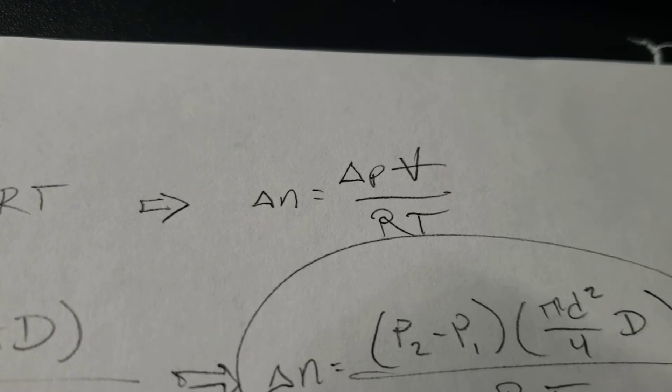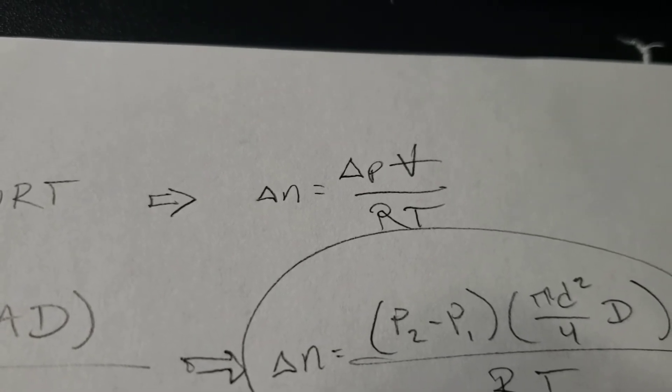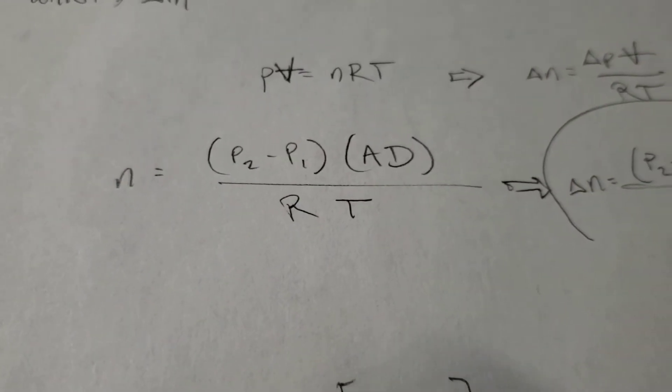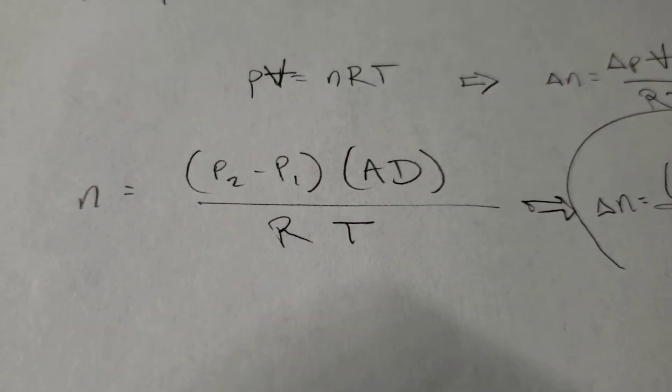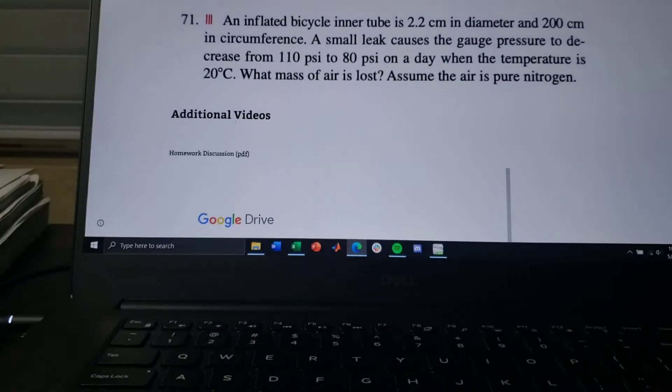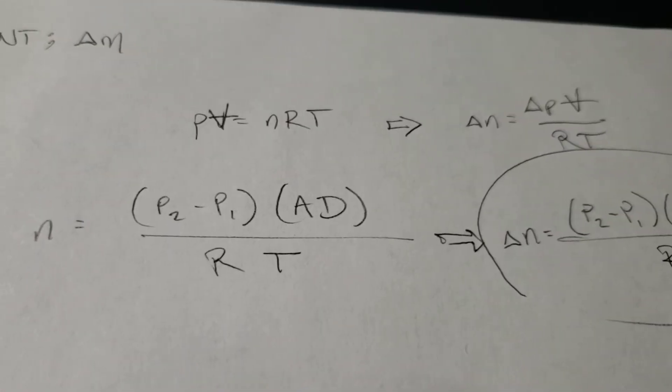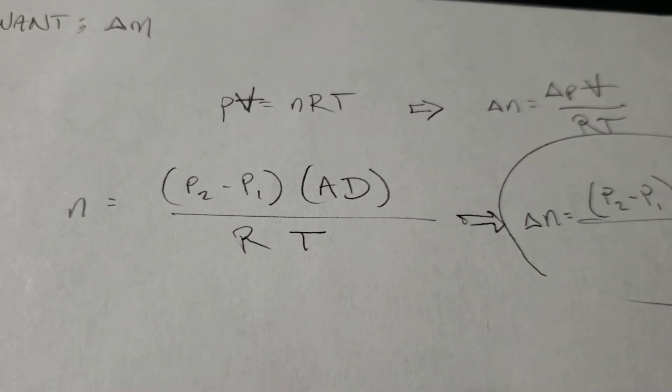Similarly, I changed P to change in pressure, or delta P, because we're looking for the change in moles over the pressure drop, or the change in pressure. So, expanding that out a bit, we can change delta P into P2 minus P1, which are the two values of pressure that they give us, converted in pascals. We can also change V into cross-sectional area times circumference, as we mentioned earlier.